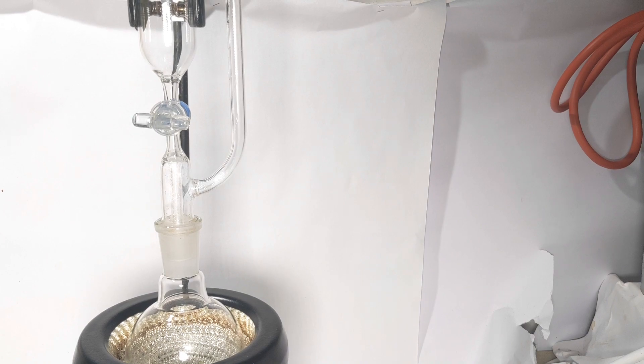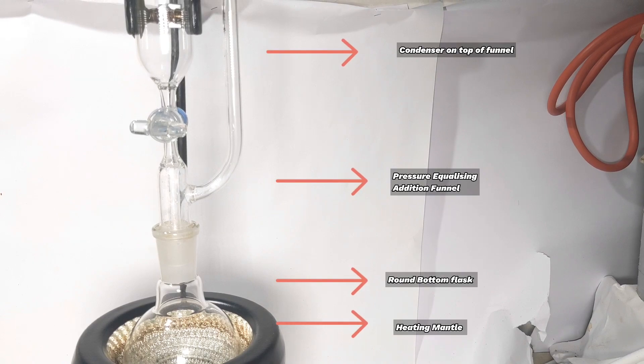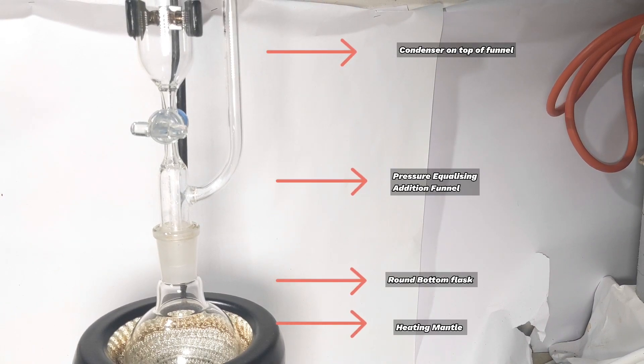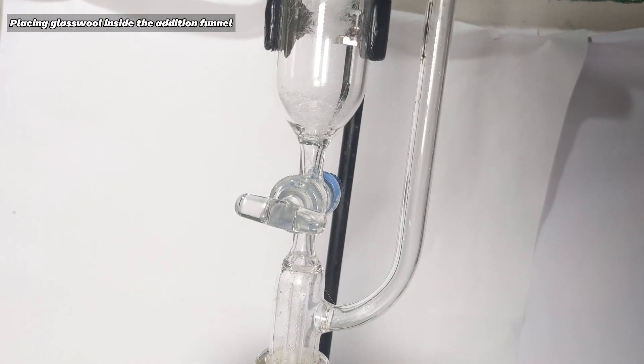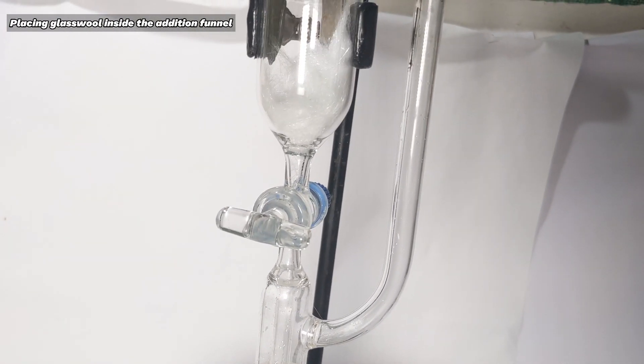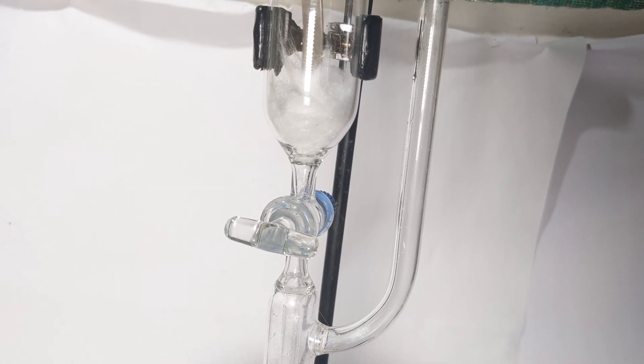Start by setting up the following: a 250 milliliter round bottom flask was placed in a heating mantle stirrer and a pressure equalizing addition funnel was placed on top of it. Some glass wool was placed inside the pressure equalizing funnel and it was pushed down using the back end of a steel spatula.